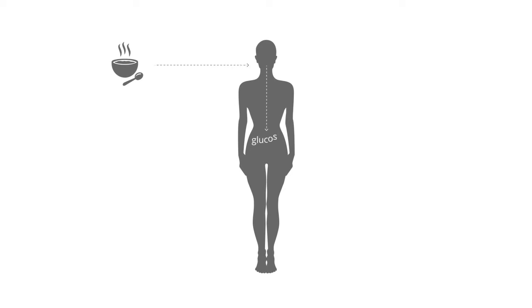When we eat, our bodies turn our food into glucose and push it into our bloodstream, which carries it around to give us energy.